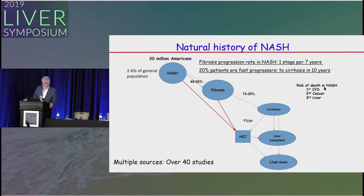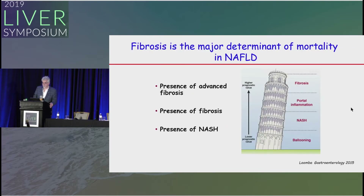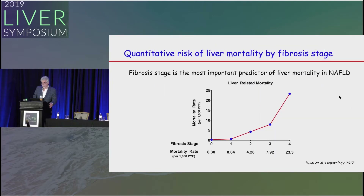Causes of death in NASH: first is cardiovascular disease, second is cancer, third is liver-related mortality. In terms of biopsy findings that predict outcome, fibrosis is the most important predictor of long-term mortality. Once patients reach stage 3 fibrosis, the mortality rate really takes off, and at stage 4 the relative risk has gone up 23-fold.